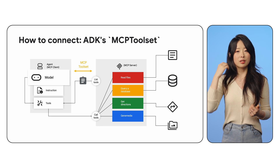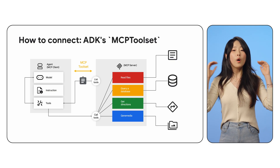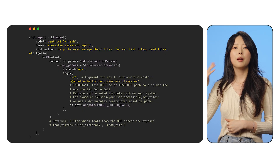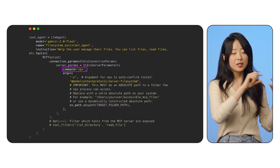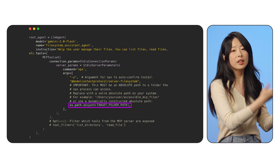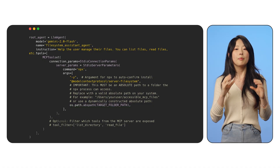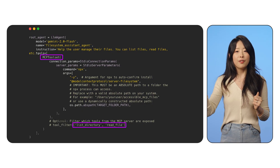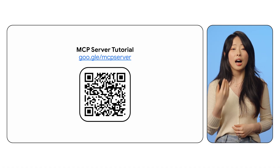Let's take a look at two quick examples. For the first example: the file system MCP server. Your agent uses a model as a brain to select tools from the toolbox. So what if you want your agent to have tools like listing or reading files from a folder? In this Python example, the MCP toolset is configured to launch an npx command that runs the file system MCP server. It passes a target folder path as an argument, giving the server access to that specific directory. By using MCP toolset, your agent can now use tools like list directory and read file right in its toolbox. You can follow the instructions on the screen or scan the QR code for more details.